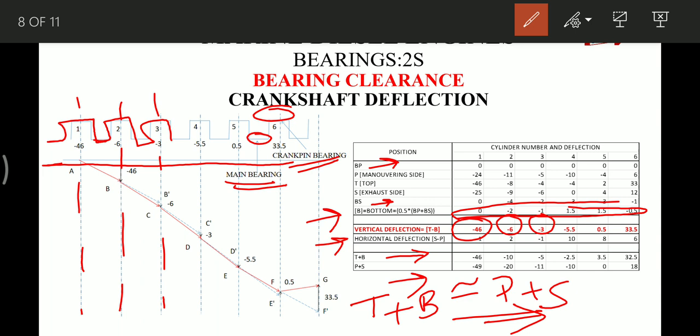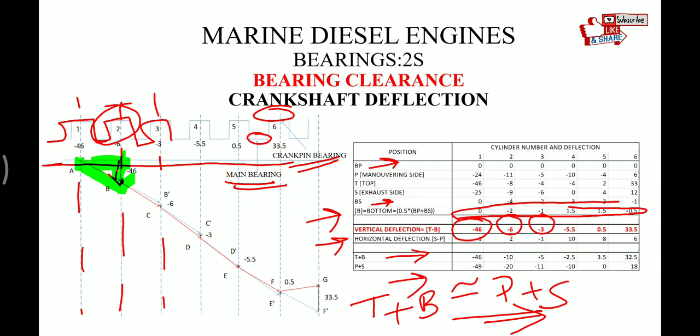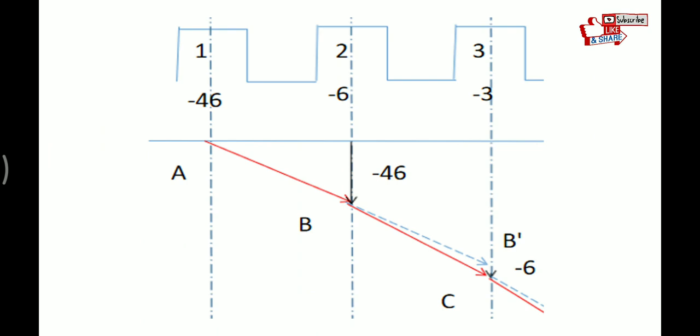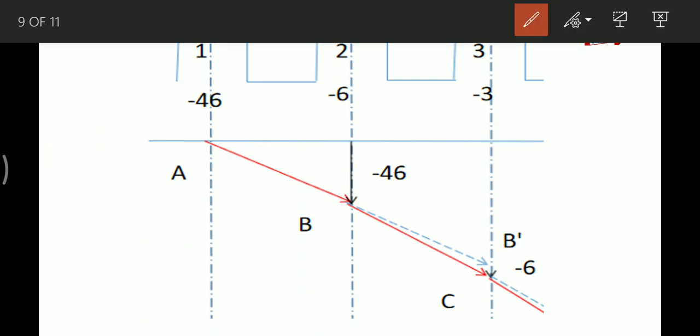Now from reference line we need to draw minus 46 on the center line of number 2 unit crank pin. So this is drawn. Let me change the color. So this minus 46 is drawn like this. After that the point on the reference line, which is this one point A, is joined with point B. So we get this triangle.